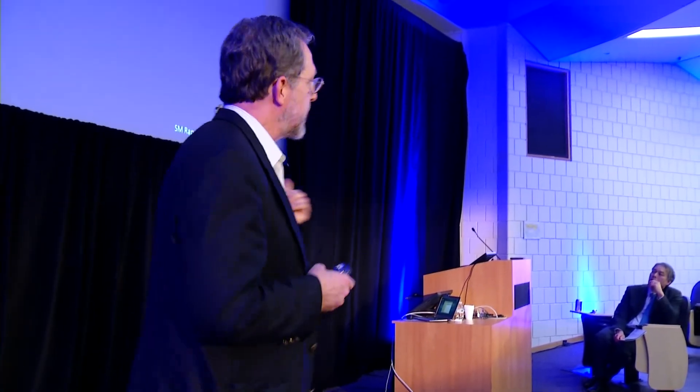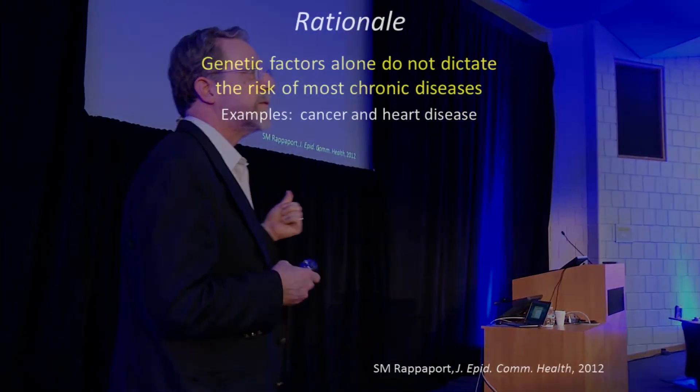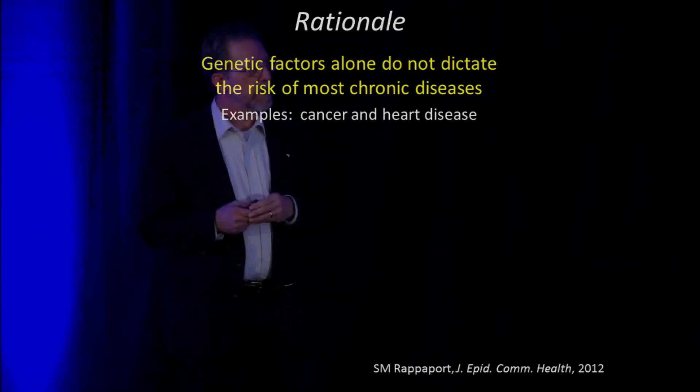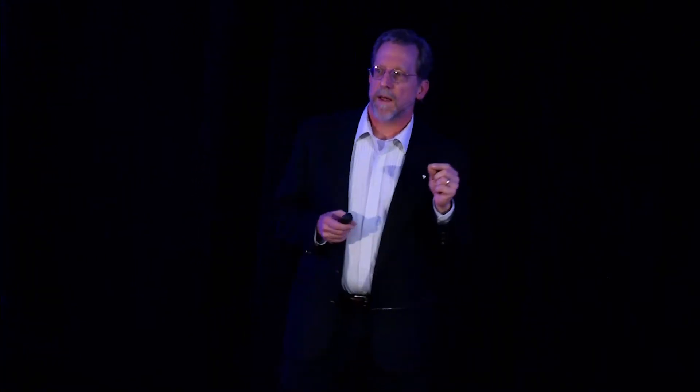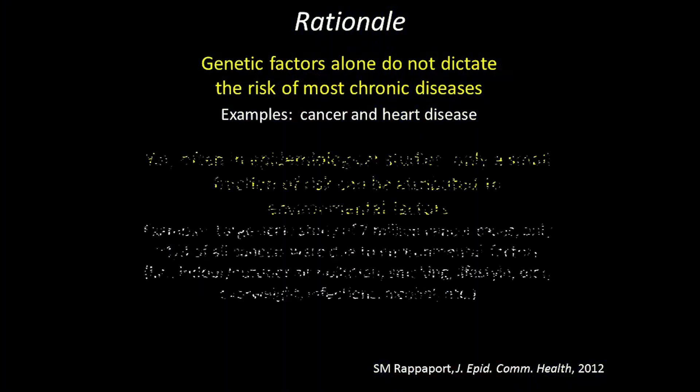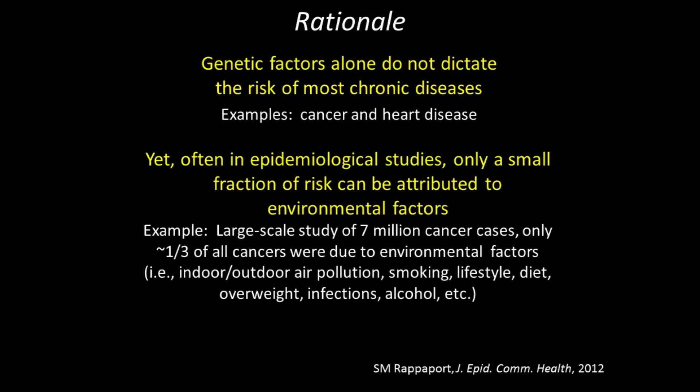Part of the rationale for this was the realization, and it's widely accepted now, that most chronic disease is not predicted only by genetic factors. A good example, or a couple of examples, are cancer and heart disease. The combination of cancer and heart disease accounts for more than 50% of the mortality in the United States right now. Yet only about 20% of cancers and 50% of heart disease can be predicted by genetic factors. What's left? The environment.